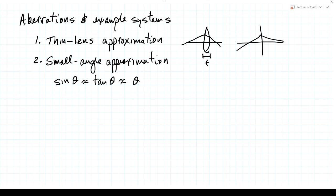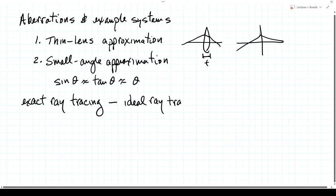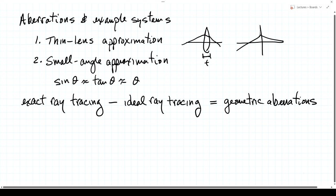However, the real world follows the exact ray tracing formulas. We end up with exact ray tracing results differing from the ideal approximate ray tracing results that we use in our pencil and paper formulas. The difference is what we call geometric aberrations — geometric because they come about from these geometric approximations, the difference between the real world and those geometric approximations.